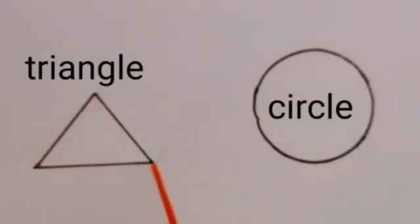Now dear students, triangle has 3 corners and 3 sides but a circle has no corner and no side.